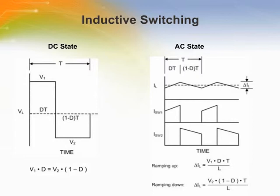The inductor doesn't care where it is connected — its operation will always be the same. In steady state, the average inductor voltage equals zero. V1 and V2 are defined by the switches and the applied circuit voltages. The inductor will pass the required DC current, and an AC current will ramp up and down as the inductor voltage is switched.